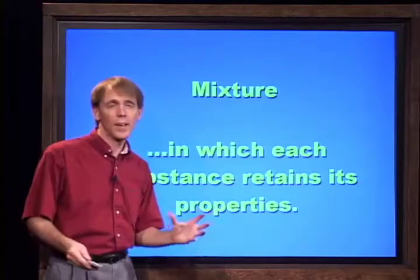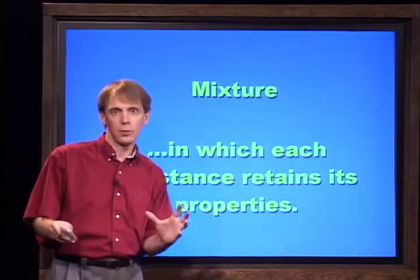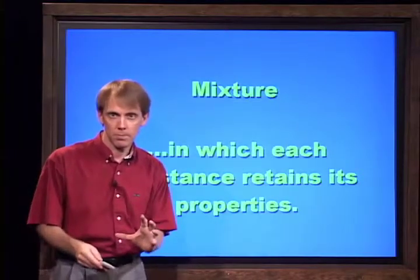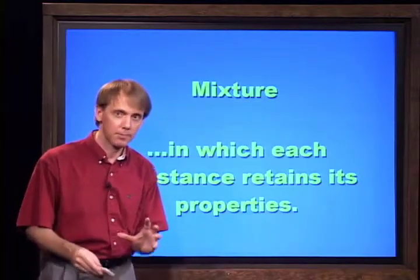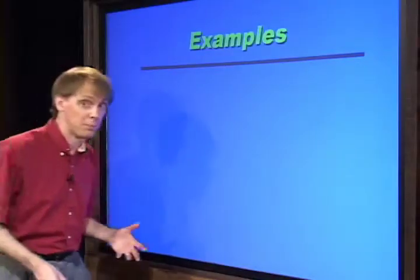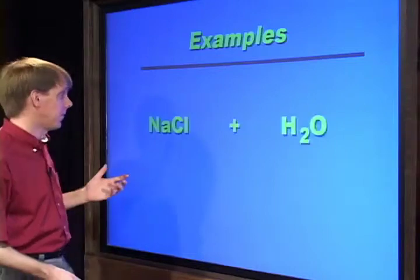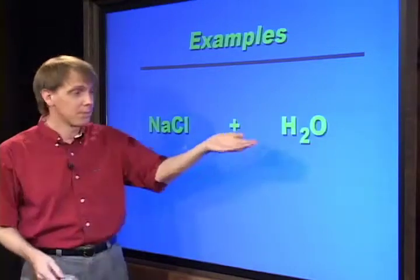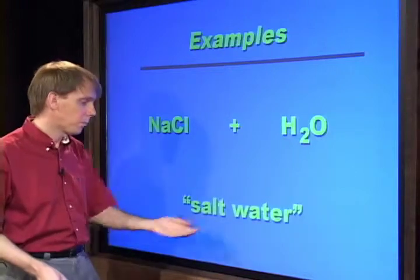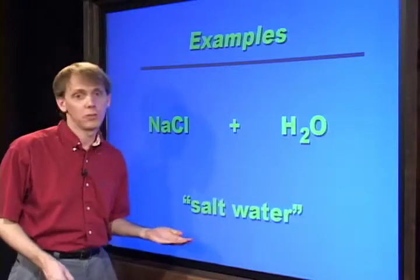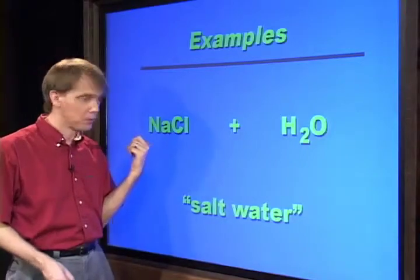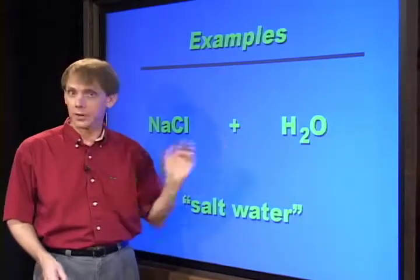When you take two components and mix them together, you're doing a physical change — you still have what you had, you've just mixed the two components together. For example, sodium chloride and water are two compounds. Mix them together and you end up with a liquid mixture known as salt water, and in salt water you still have the properties of both sodium chloride and water.